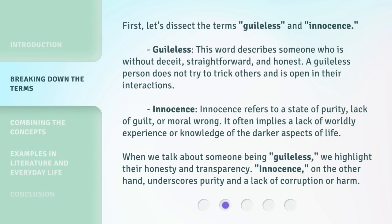First, let's dissect the terms guileless and innocence. Guileless: this word describes someone who is without deceit, straightforward, and honest. A guileless person does not try to trick others and is open in their interactions. Innocence refers to a state of purity, lack of guilt, or moral wrong. It often implies a lack of worldly experience or knowledge of the darker aspects of life. When we talk about someone being guileless, we highlight their honesty and transparency. Innocence, on the other hand, underscores purity and a lack of corruption or harm.